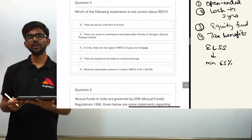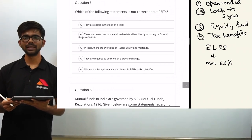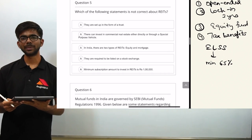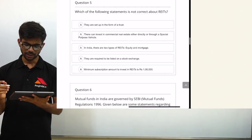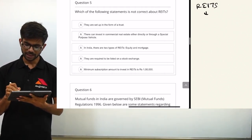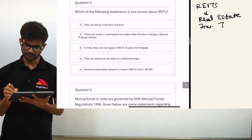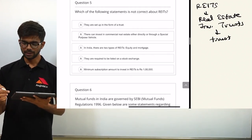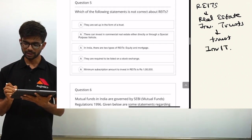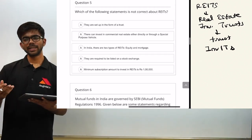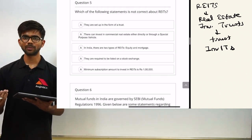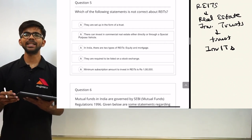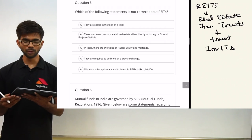Moving on to question five. Before discussing this question, I would like to mention that I have discussed this topic on our Telegram group, where we regularly conduct quizzes and post questions, and share relevant exam information. Do join our Telegram group. Question five: which of the following statements is not correct about REITs? REITs are real estate investment trusts, recently introduced by SEBI. An investor who cannot directly buy real estate can invest in a REIT to benefit from the rising real estate market and indirectly invest in the sector.